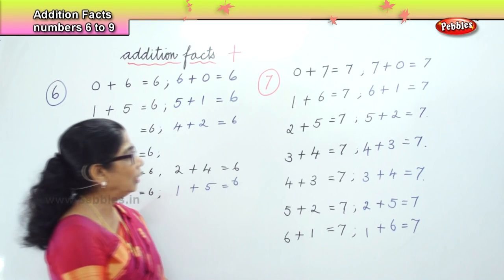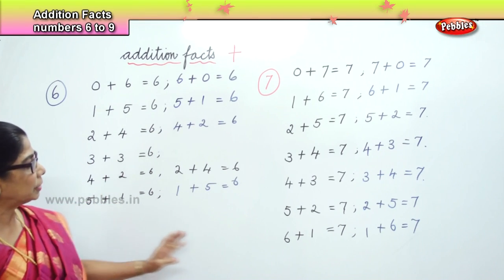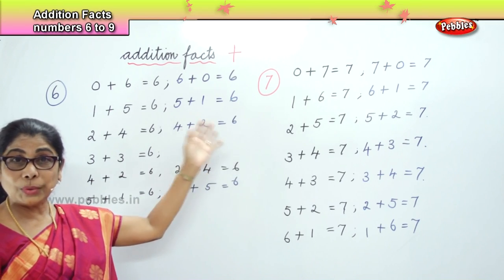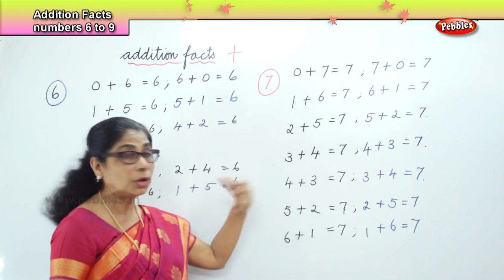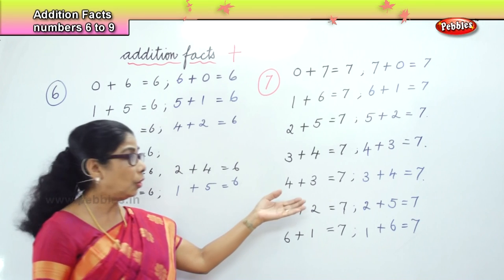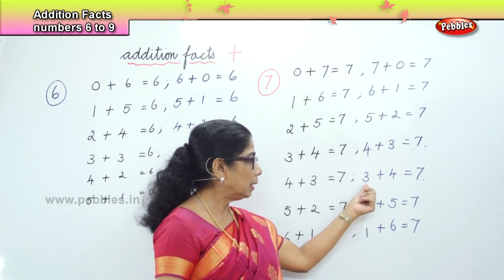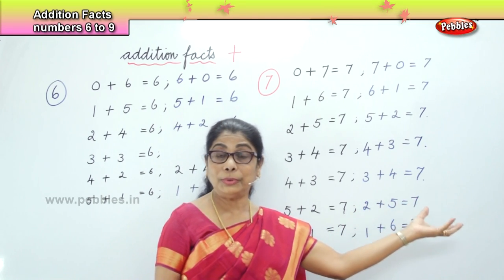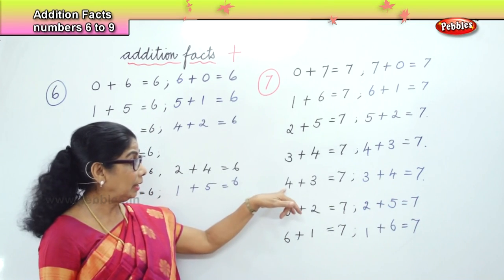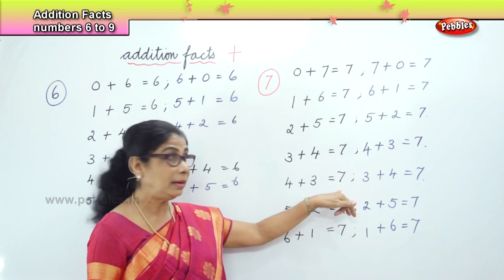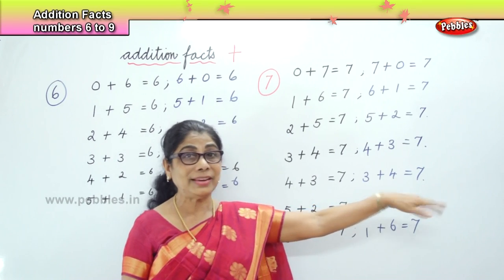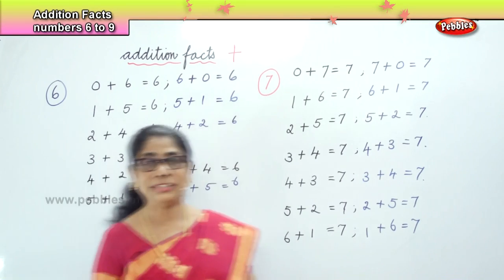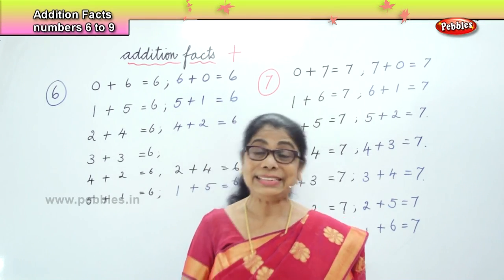Next is 1 plus 6 equal to 7. So we have now learned the number combinations of 6 and 7. When you are given 3 plus 4, quickly you must say 7. Or if given a blank — what is 3 plus dash equal to 7 — you should be able to fill in the blanks.